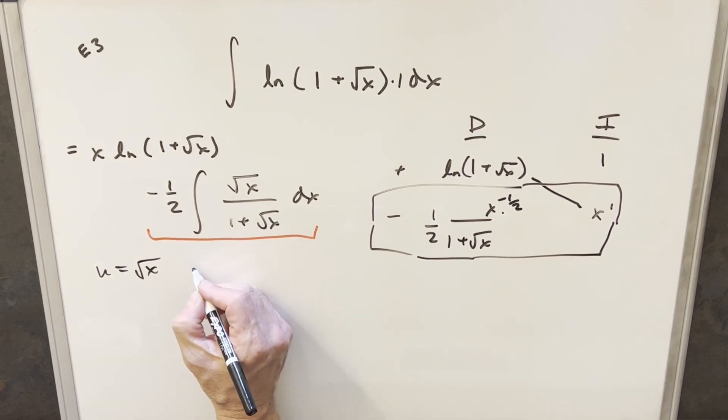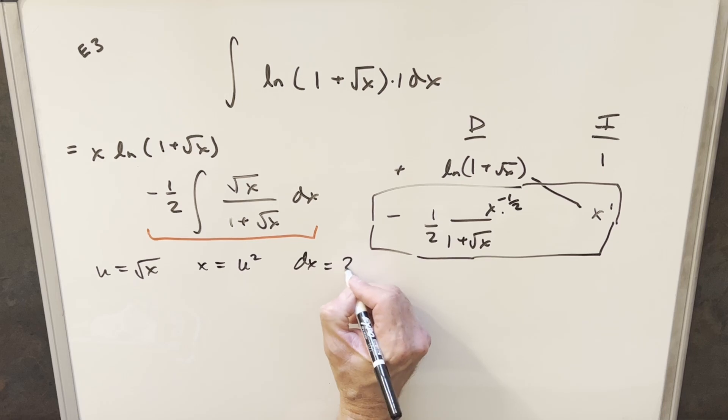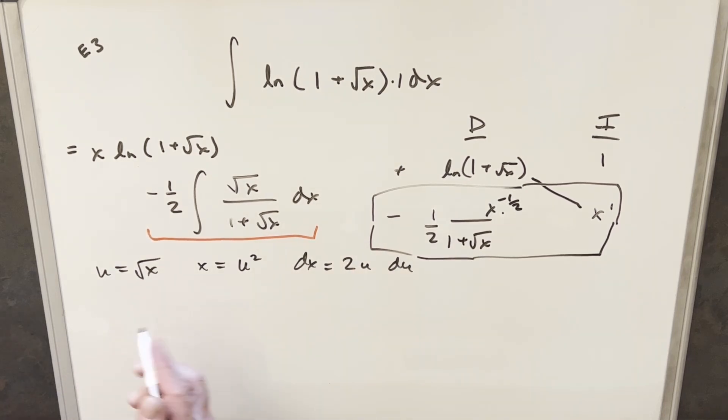And then with that, I can find my value for x is going to be x equals u squared. I'll take a derivative and get my dx is going to be two u du. And then we've got what we need to do this substitution. So we'll still have our minus one half up front. Our square root of x in the numerator is just going to be a u. dx, we're going to have our two u du. And then we're just going to have one plus u in the denominator.